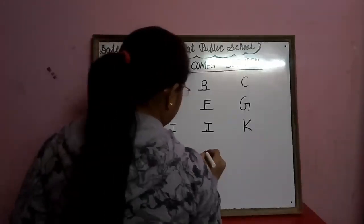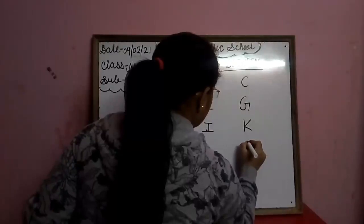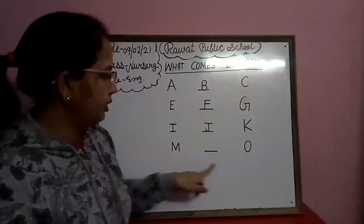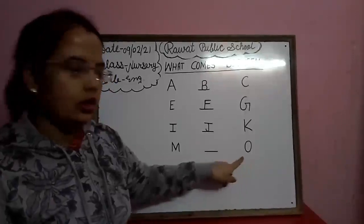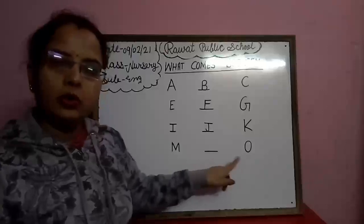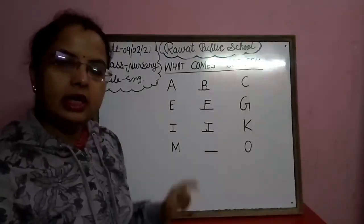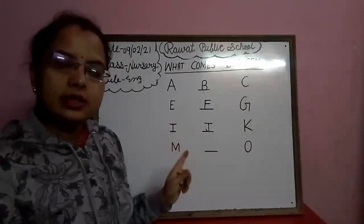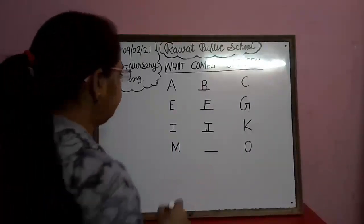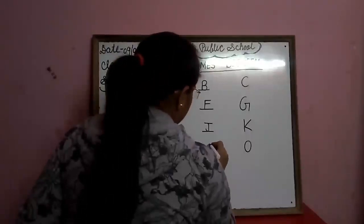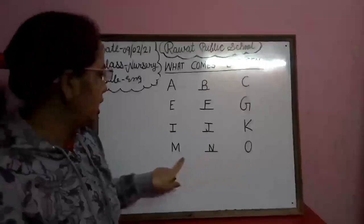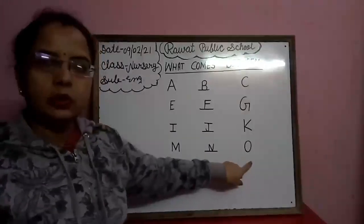This is M and this is O. What comes between M and O? M aur O ke beech mein konsa letter aata hai? N. So we will write here N. M, N, O.